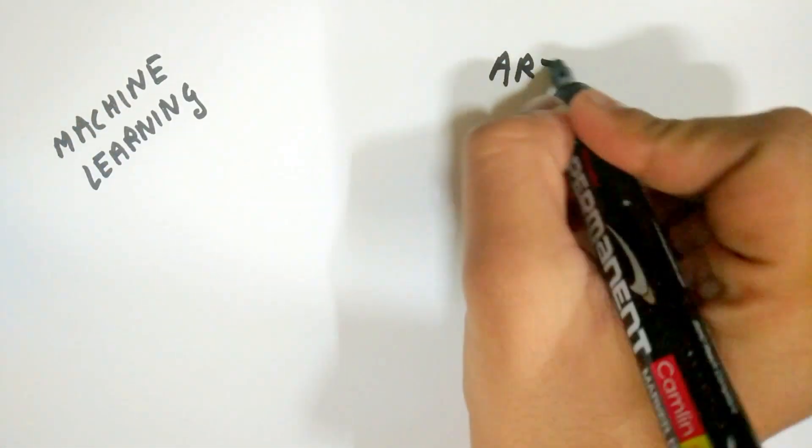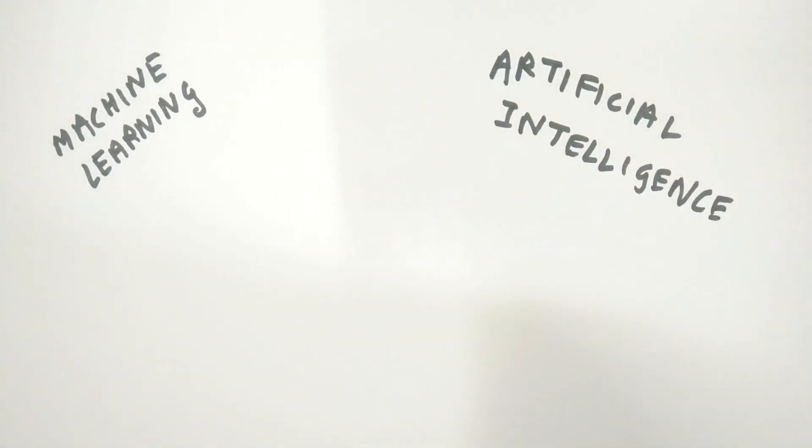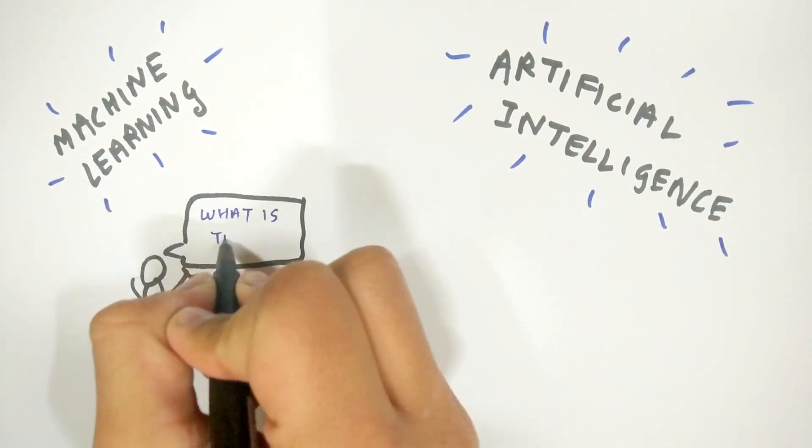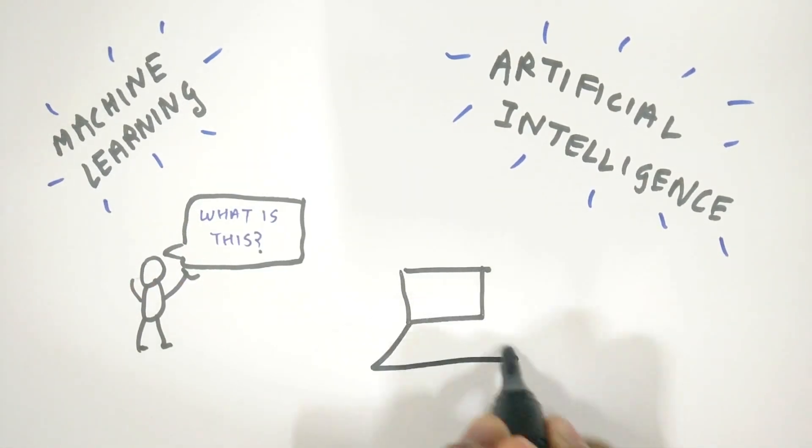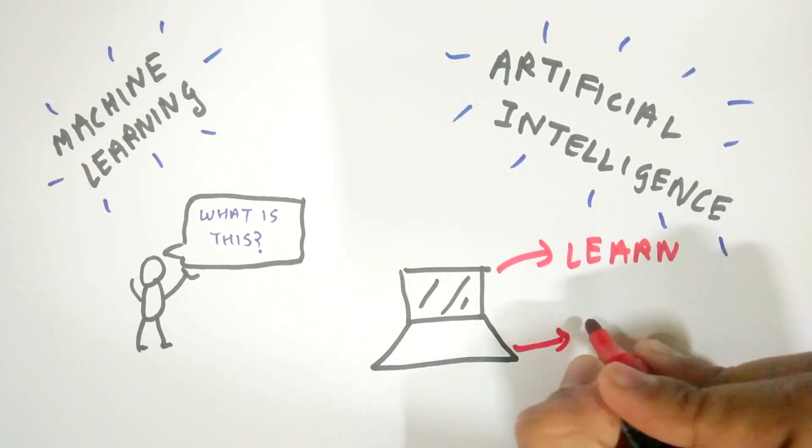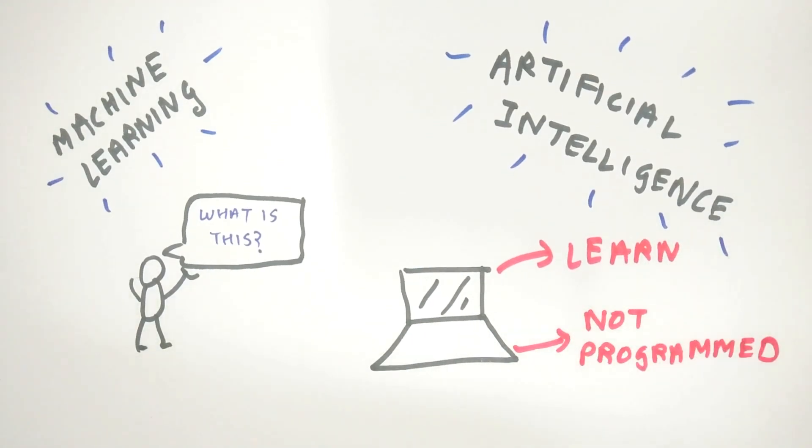Machine learning and artificial intelligence have become common phrases in the news nowadays. So, what is machine learning? Machine learning is defined as that field of study that gives computers the ability to learn without being explicitly programmed to learn.